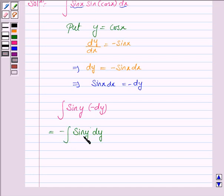Now the integral of sin y dy is minus cos y plus c. So this becomes minus of minus cos y plus c.